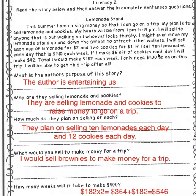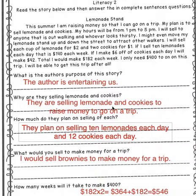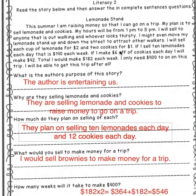It says if I make $6 off of cookies each day, I will make $42. So here we have to think a little bit. If they're selling two cookies for $1 and they want to make $6, we would need to do $6 times 2, which would be 12 cookies each day. For every $1 made on cookies, they sold two cookies — so the first two cookies made $1, the next two made $2, then $3, $4, $5, $6. So $6 times 2 equals 12 cookies each day.